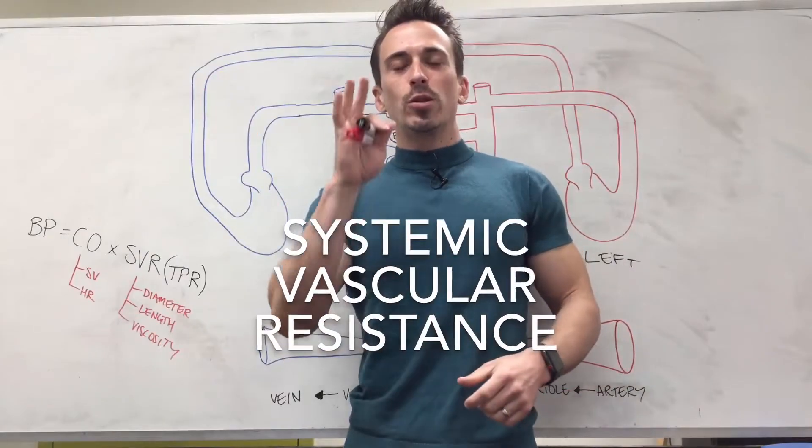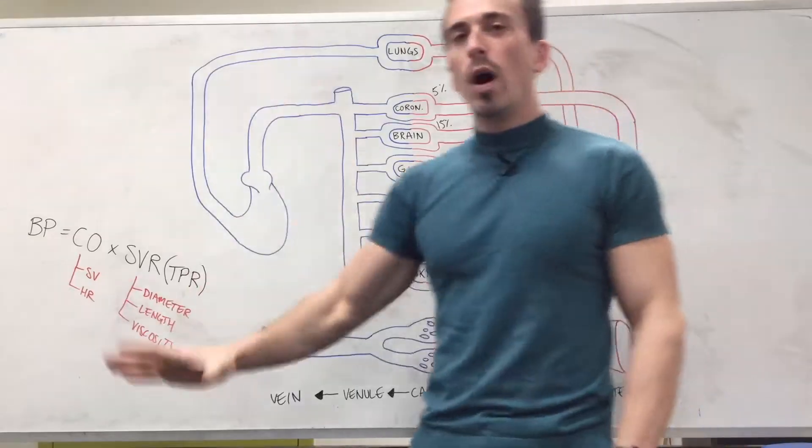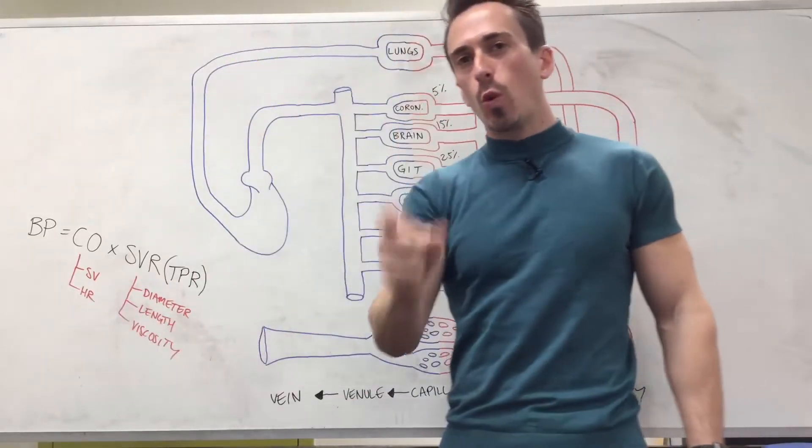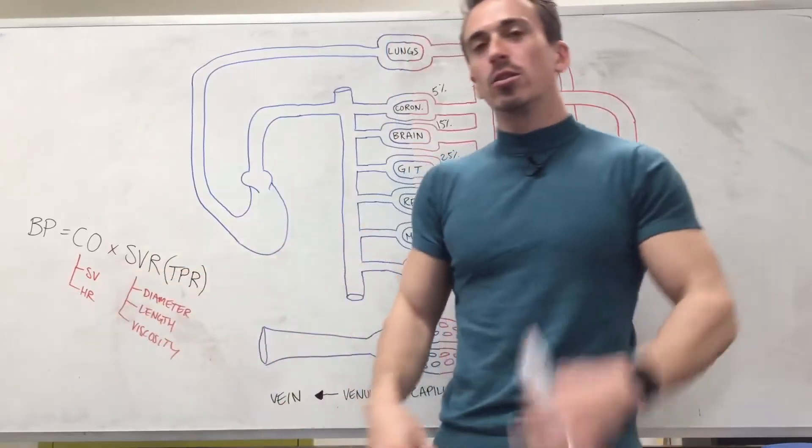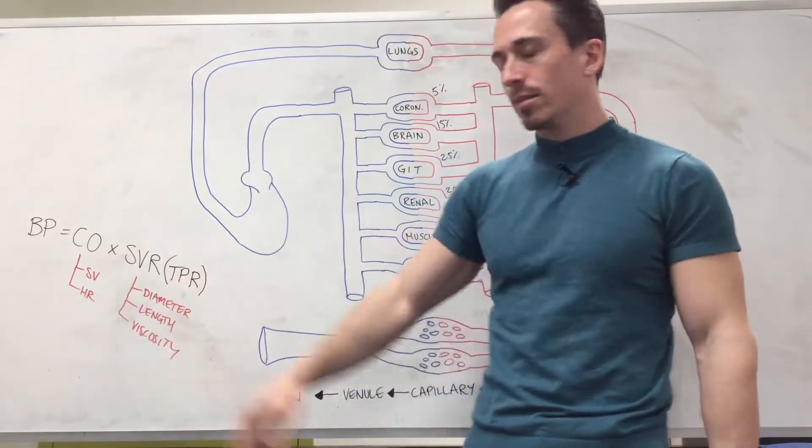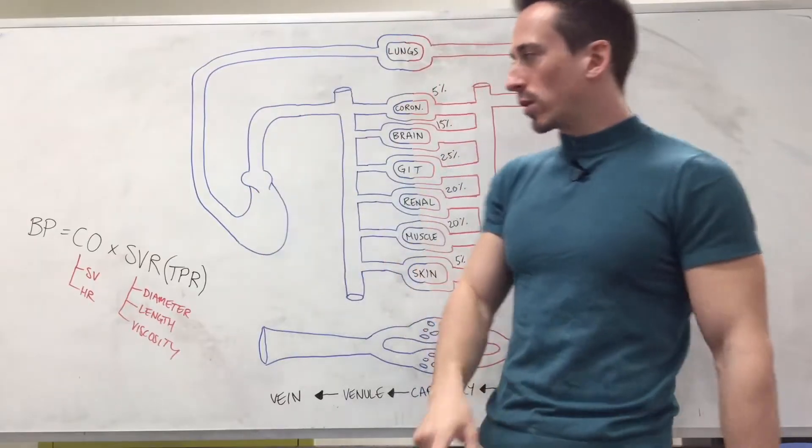Hi everyone, Dr. Mark here. In this video we're talking about blood pressure, but more specifically one part of the blood pressure equation which is really important: something called systemic vascular resistance, also known as total peripheral resistance. I know it sounds like a mouthful and doesn't seem to make sense from the beginning, but let's have a quick look.